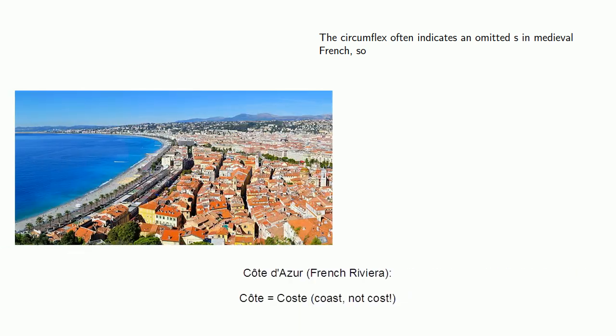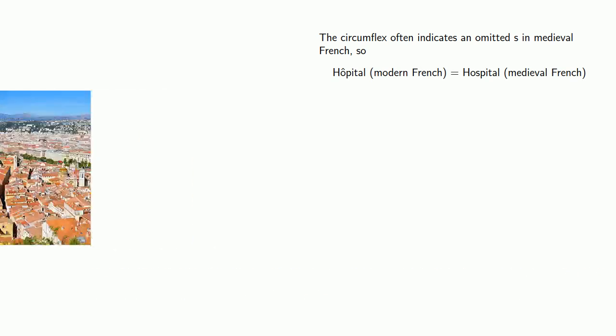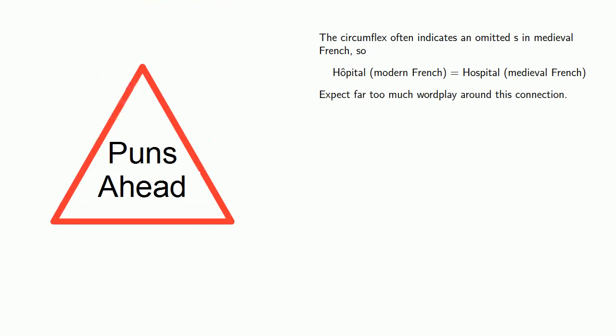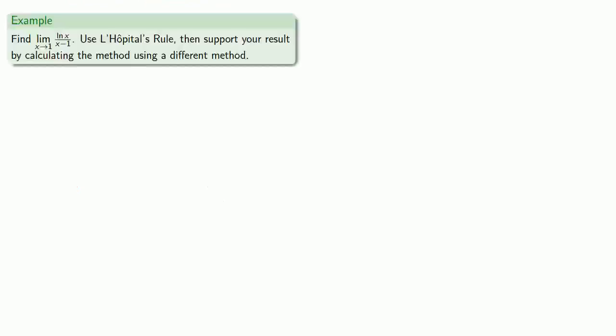Now just a quick note, the circumflex often indicates an omitted S in medieval French. So Hôpital in modern French was actually spelled Hospital in medieval French. And if you've listened to me this far, you know what to expect. Far too much wordplay around this connection. So let's take a simple initial example.